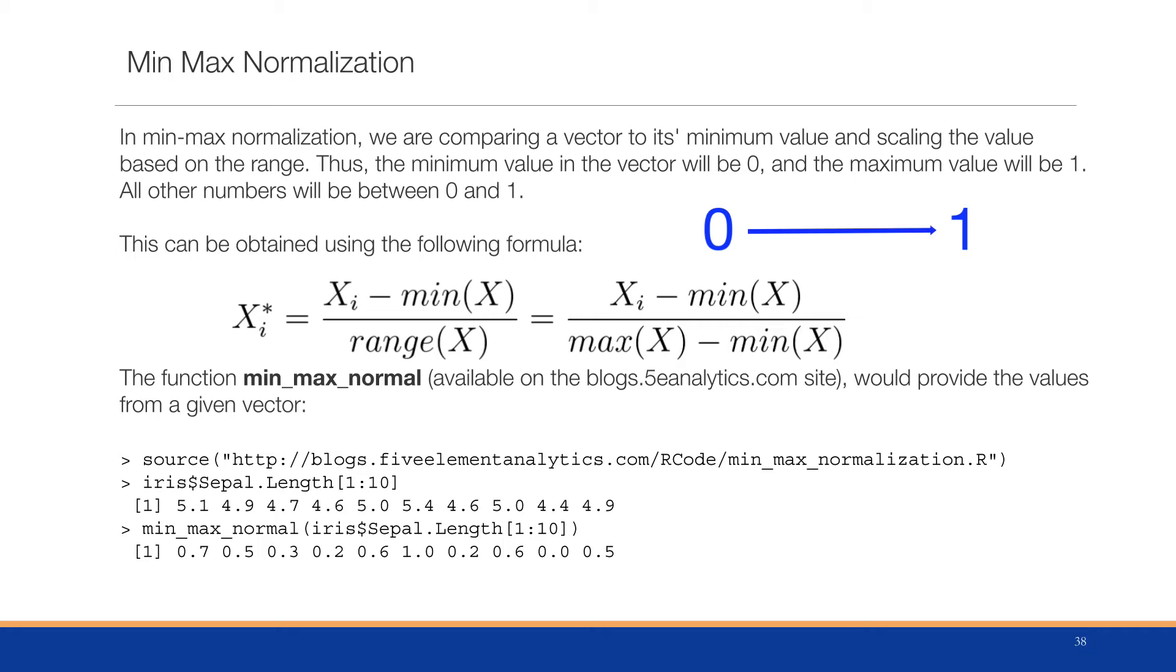All other numbers will be between zero and one. How do we obtain this? Consider we have the following formula. Xi, which stands for a particular observation, subtract the minimum and we divide by the range. Let's rewrite that. Xi, which is the observation minus the minimum divided by the maximum minus the minimum. So that denominator is our range.